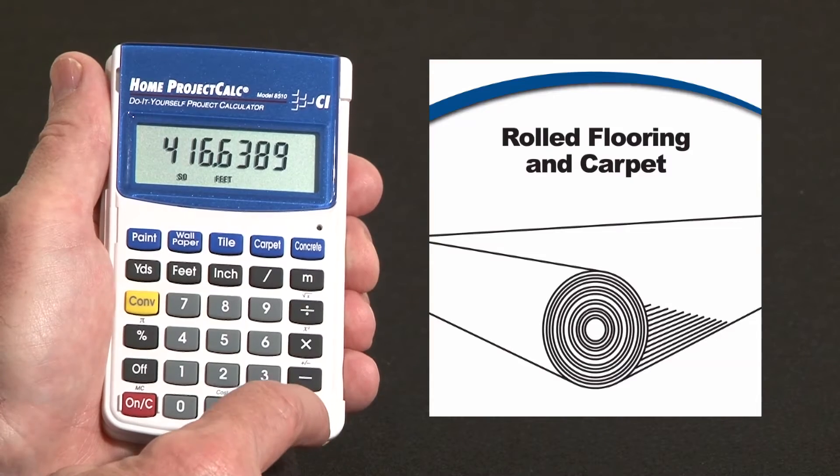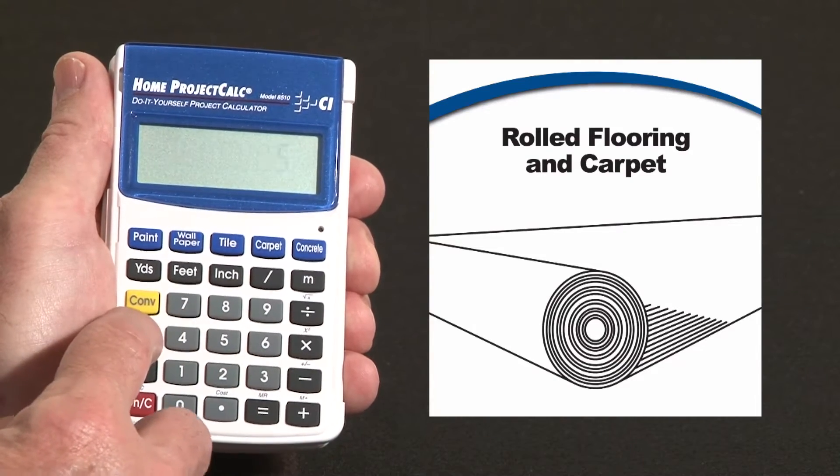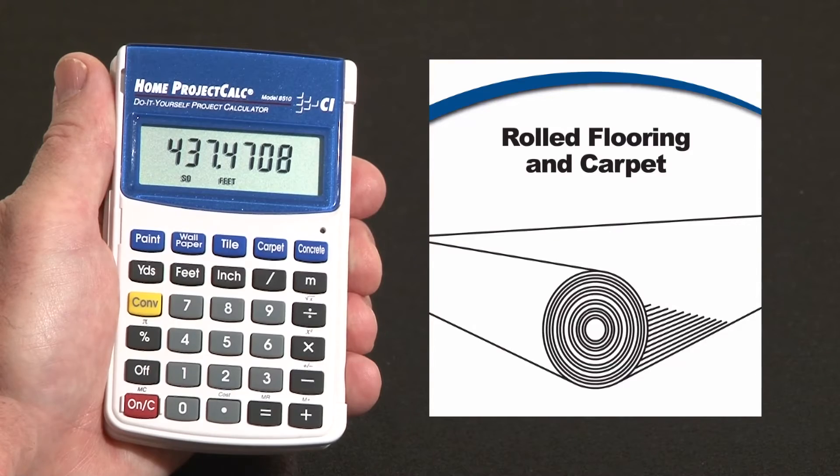Now you might want to add about 5% for waste, so we end up with about 437 square feet needed.